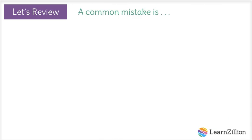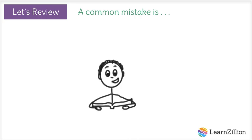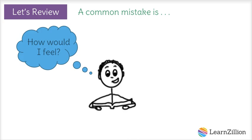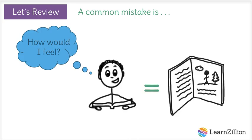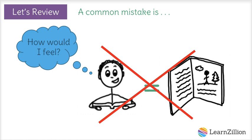A common mistake readers sometimes make is to think only about how they would feel if they were in the text and just assume that the characters would feel the same way. It's important to remember that not everybody feels the same way that you do, so not everybody would have the same reactions. It's important to use clues from the text to figure out how a character feels rather than just think about your own experience.